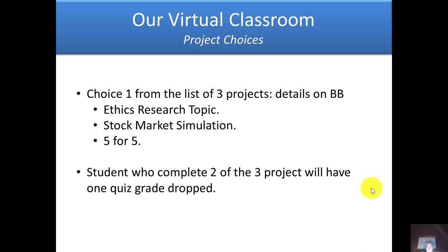For the projects, some of these were going to be done in class, so I'm going to give you a choice from a list of three. You can either do the ethics research project, write me a summary of your stock market simulation, or complete the PowerPoint sections of the 5 for 5. You also have a choice of completing two out of the three projects, and if you do that, we'll drop one of your lowest quiz grades. The project is due May the 3rd and it's out there on Blackboard.